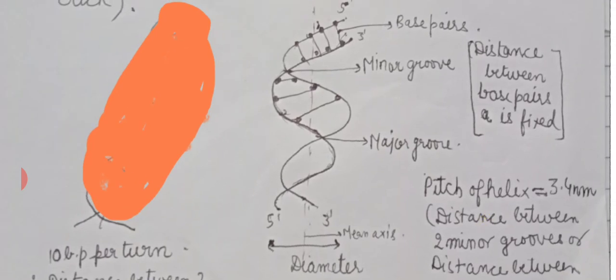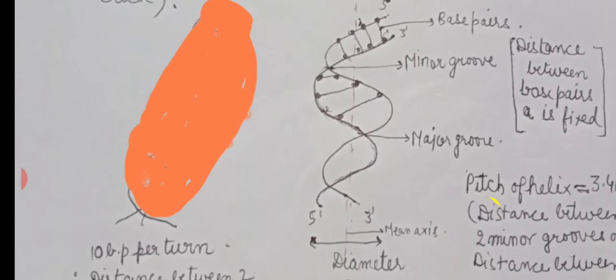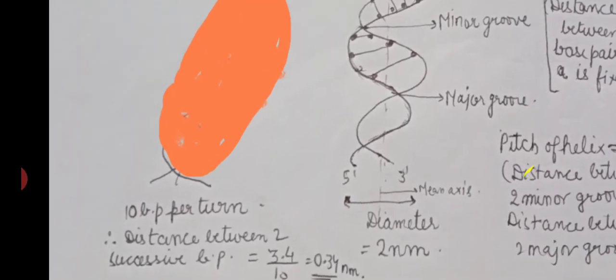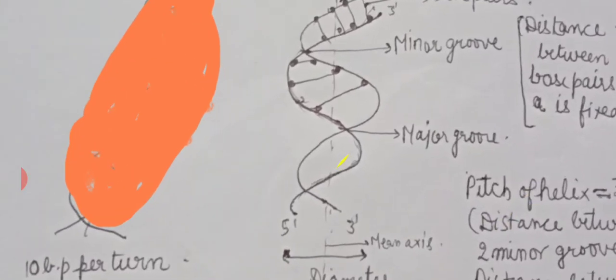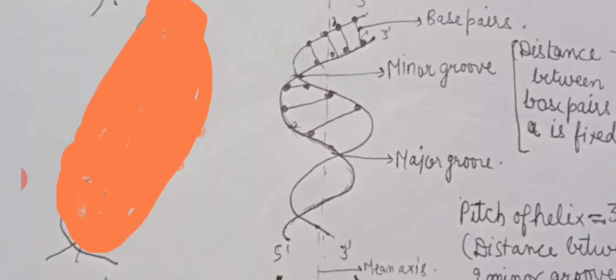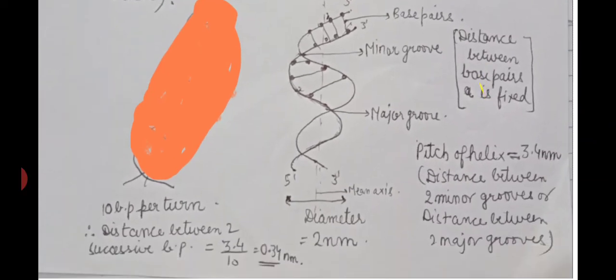In each complete turn of the B-DNA helix, there are 10 base pairs. So the pitch of the helix — the distance between two minor grooves or two major grooves — is 3.4 nanometers, and each turn contains exactly 10 base pairs.